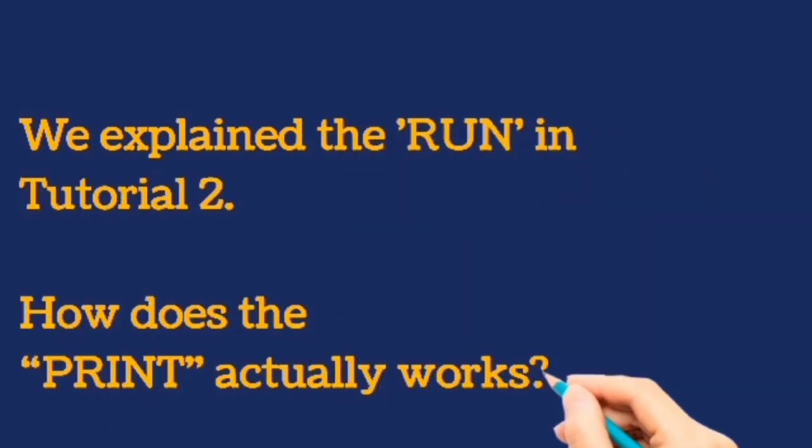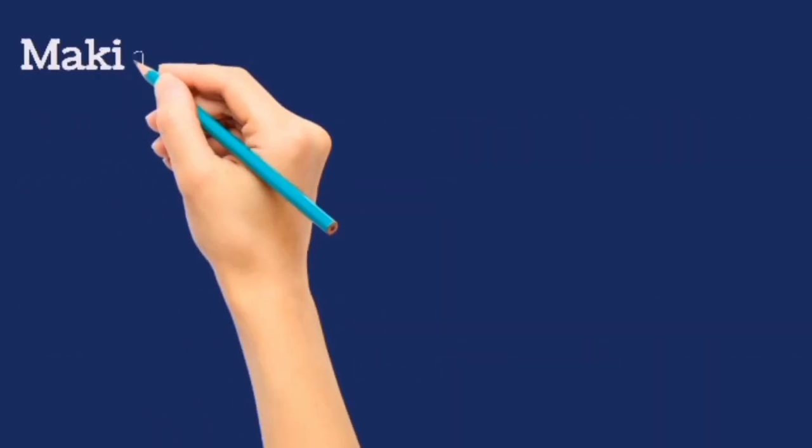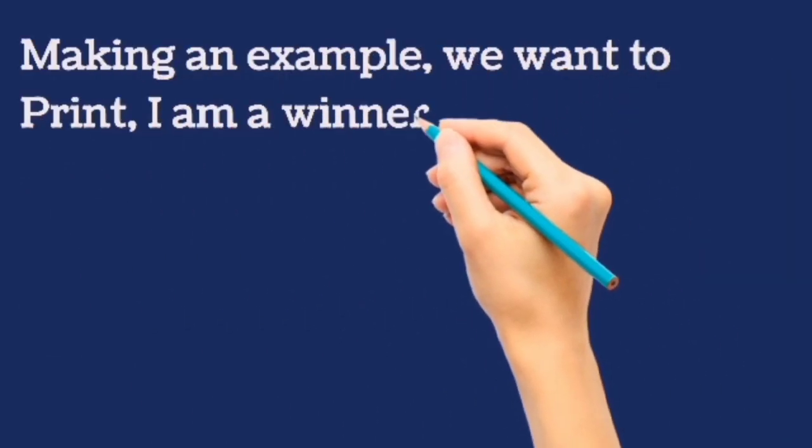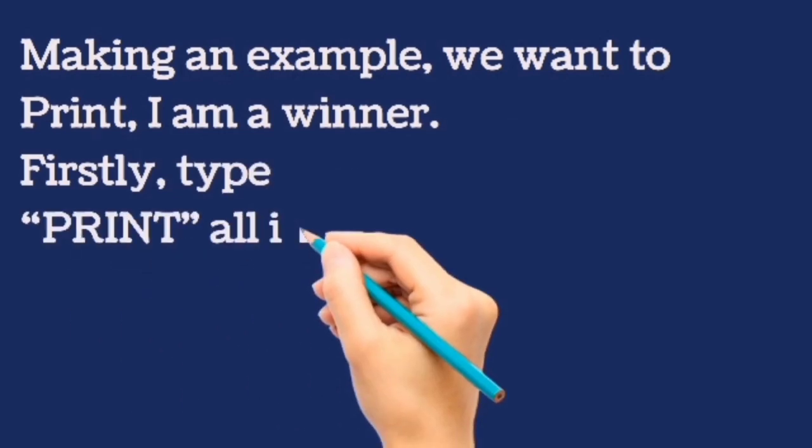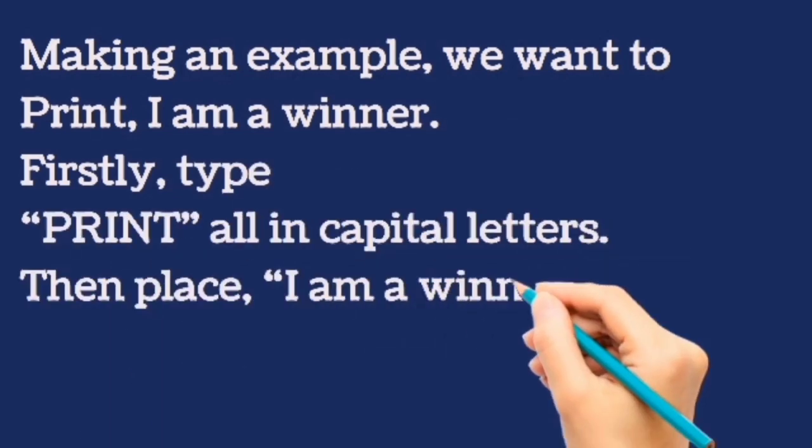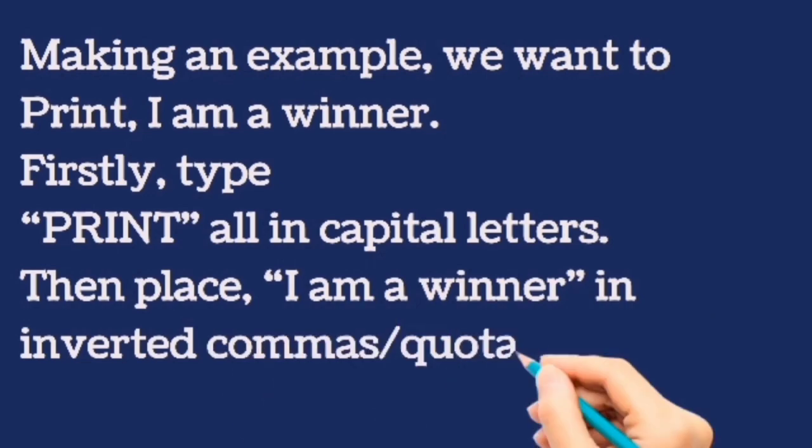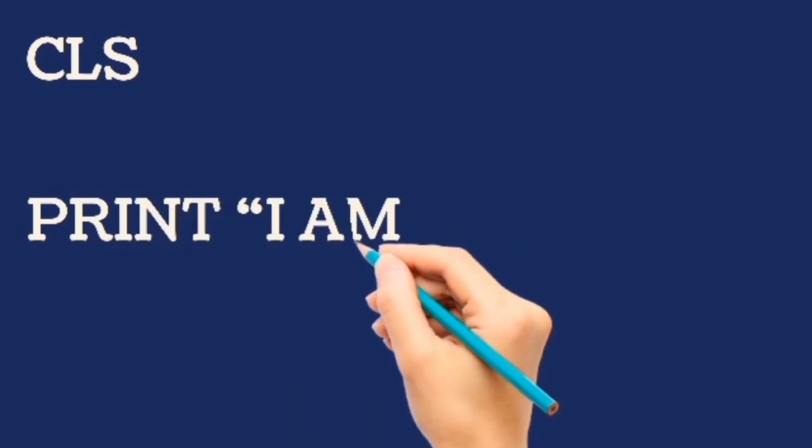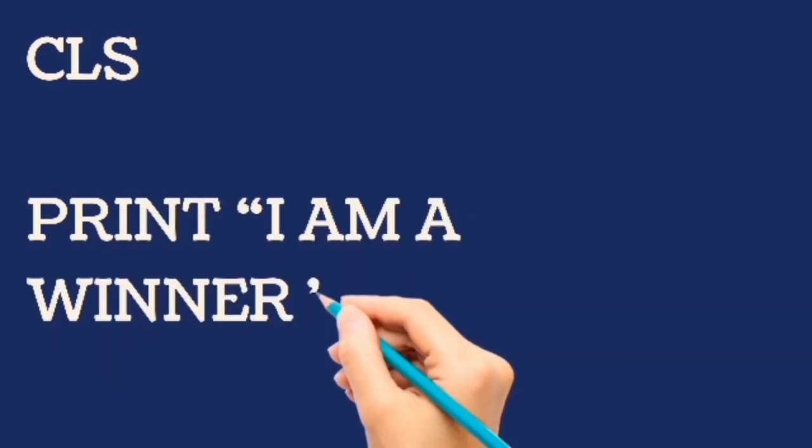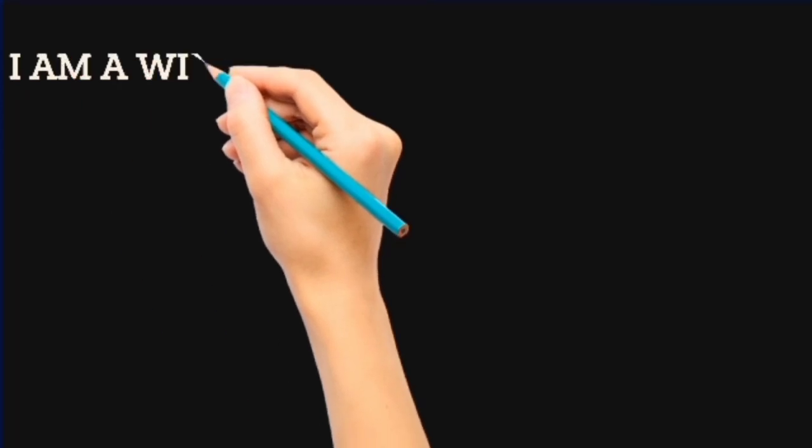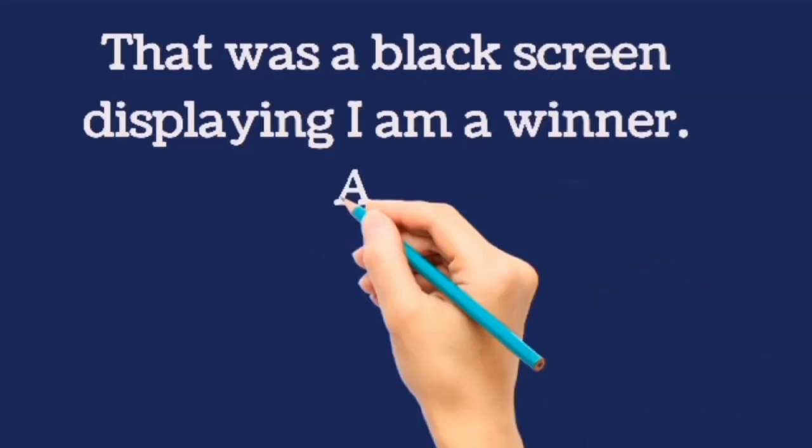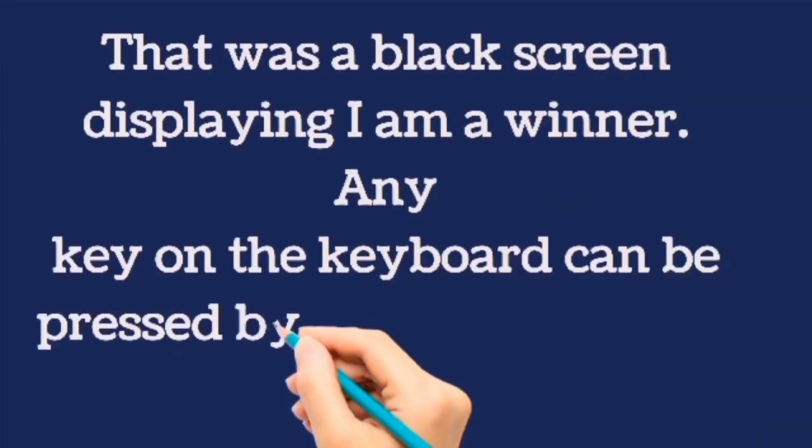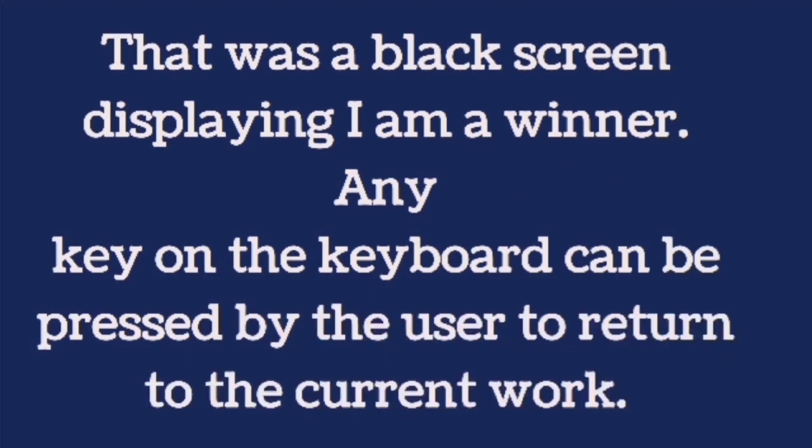How does the print actually work? Making an example, we want to print I am a winner. Firstly, type print or in capital letters, then place I am a winner in inverted commas or quotation marks. The outcome of our printed word would be I am a winner on a black screen. Any key on the keyboard can be pressed by the user to return to the current work.